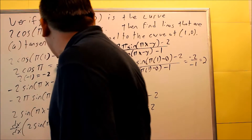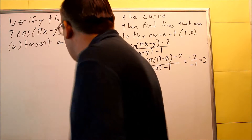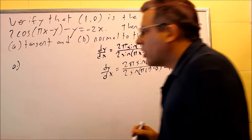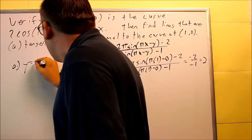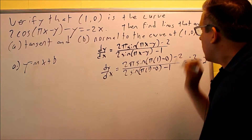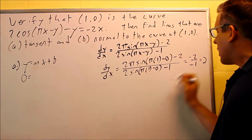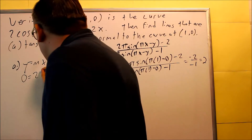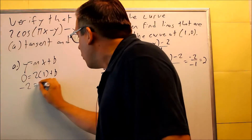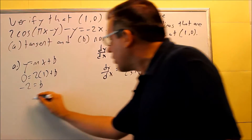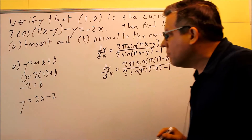Now let's write the equation for part a, the tangent line. We start with y = mx + b. We put in x = 1 and y = 0, and m is our dy/dx value of 2. So 0 = 2 times 1 + b, which gives us b = negative 2. So the tangent line equation is y = 2x minus 2.